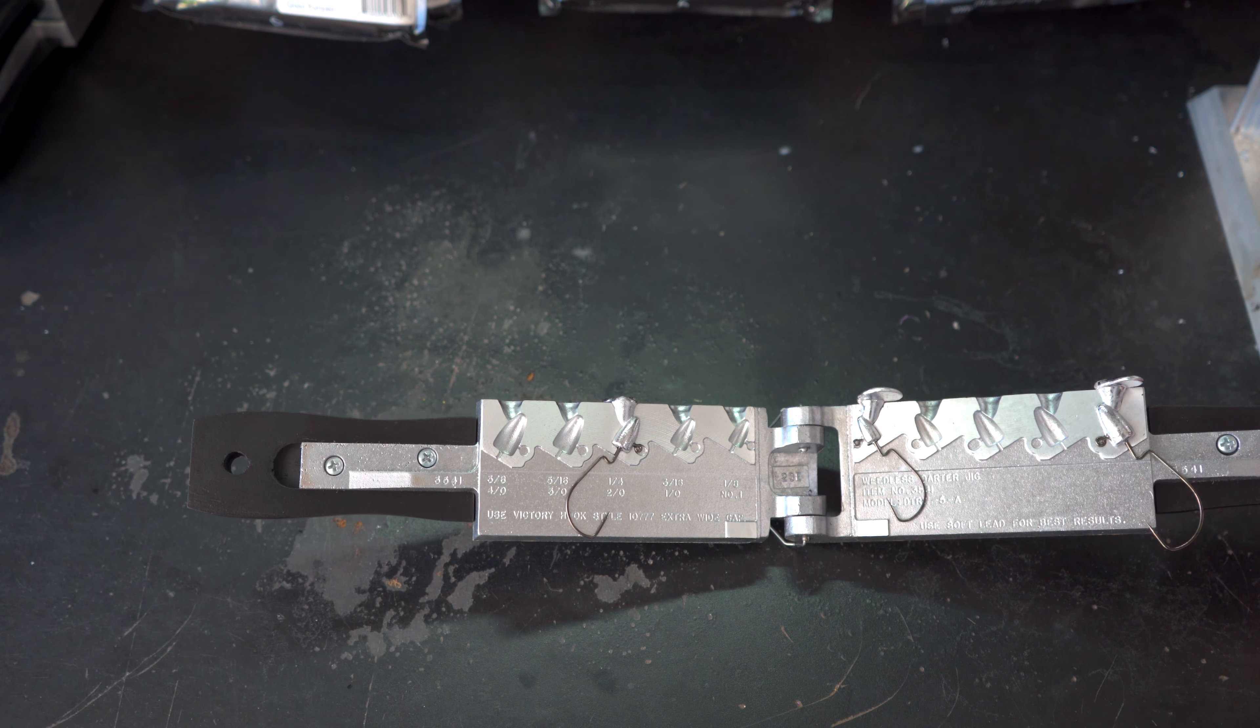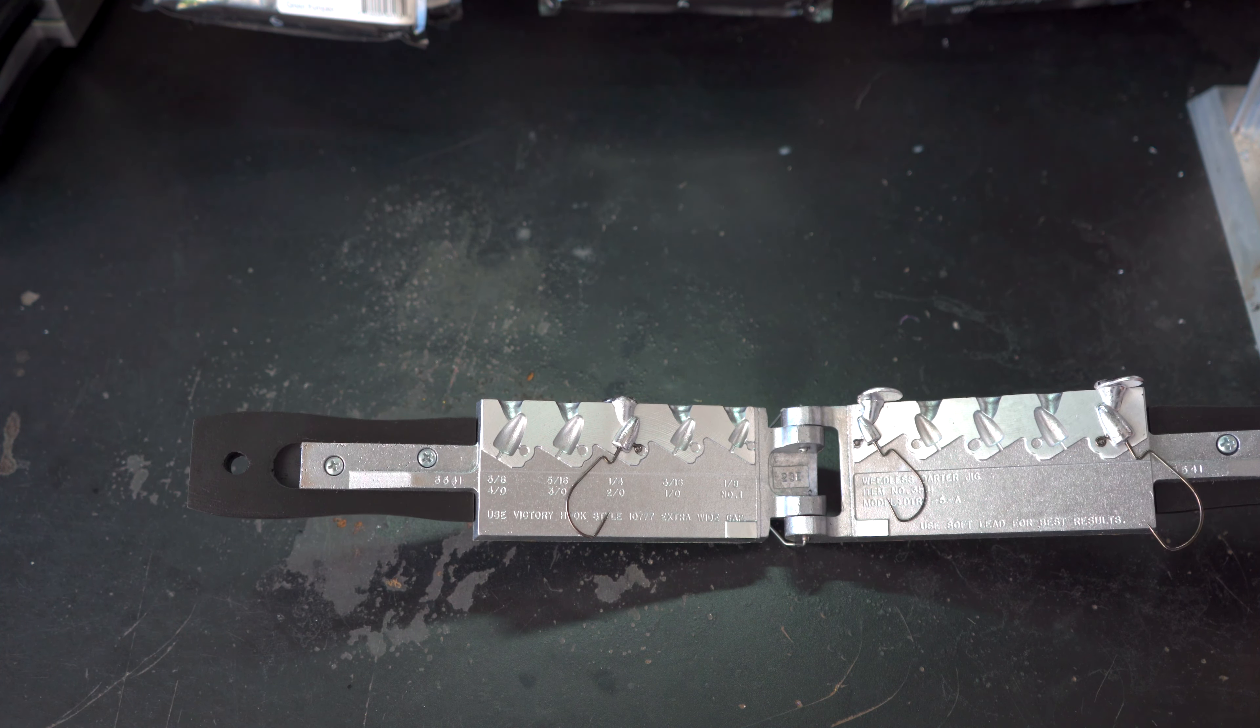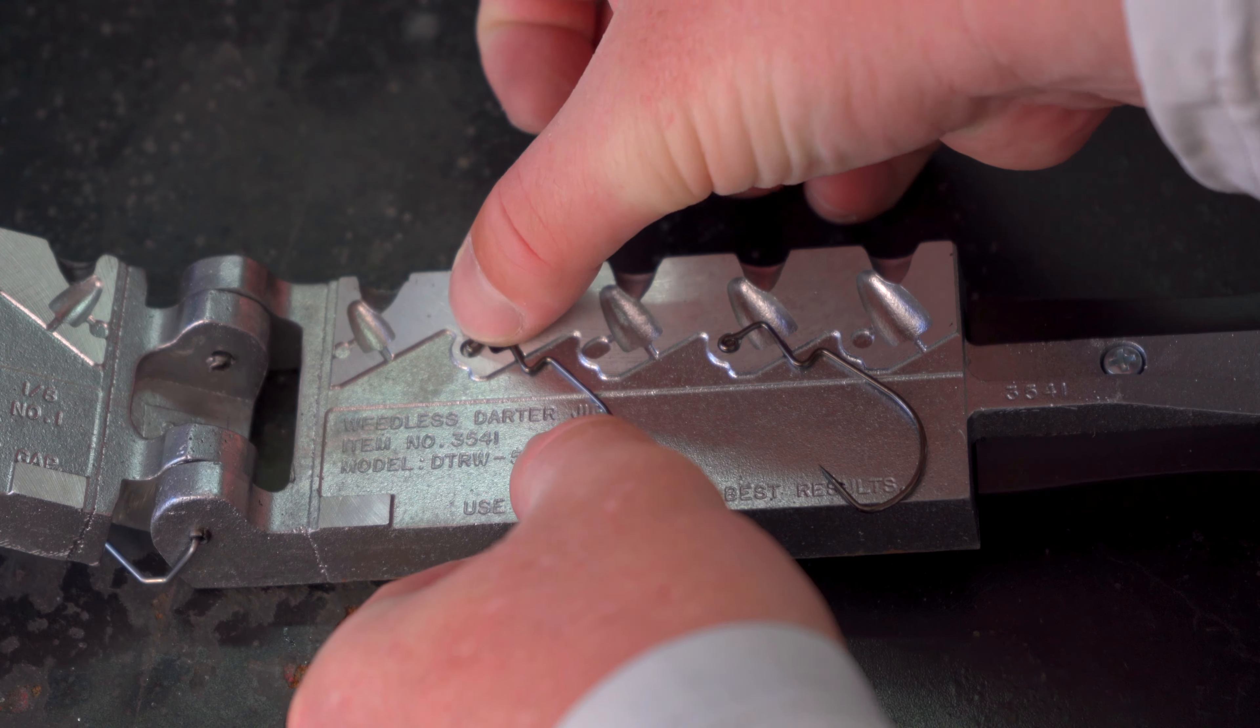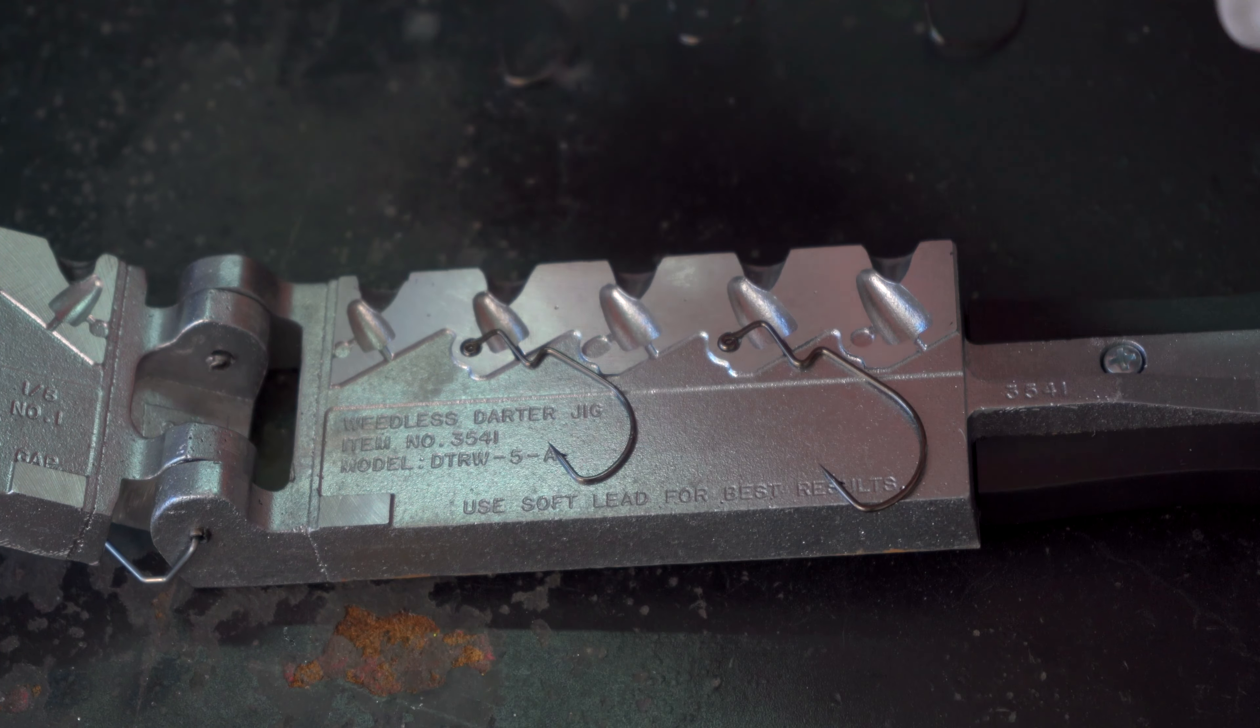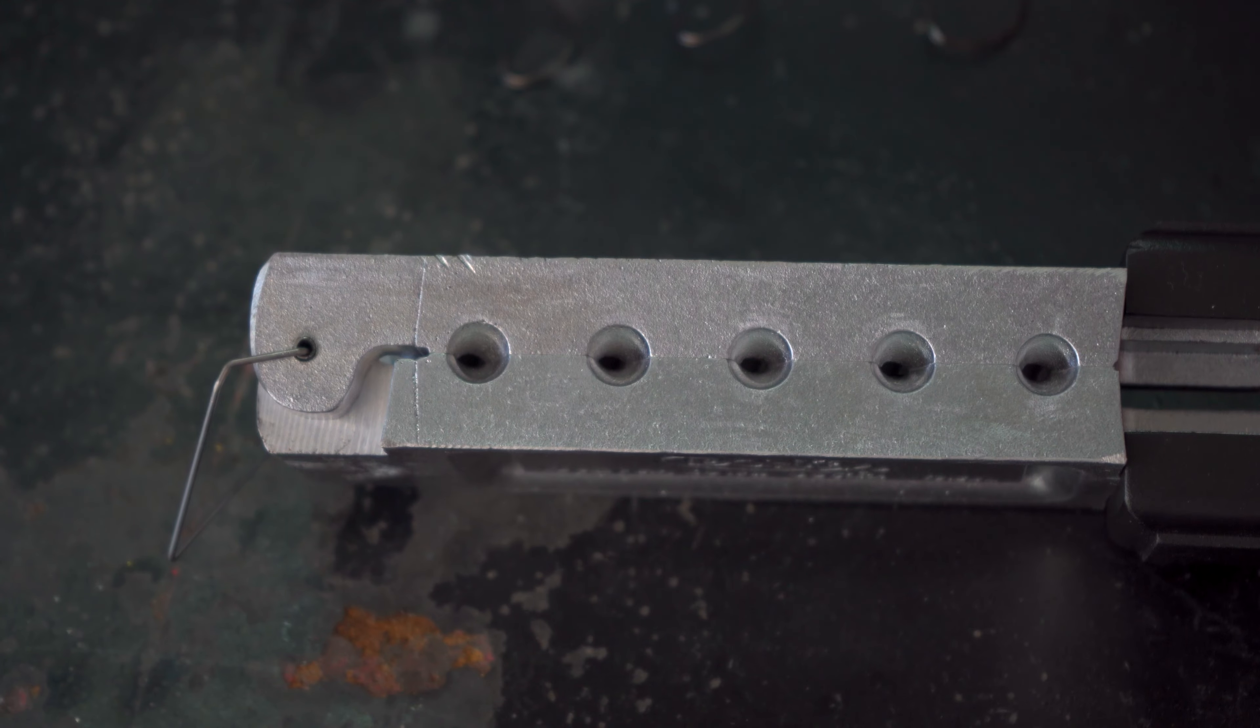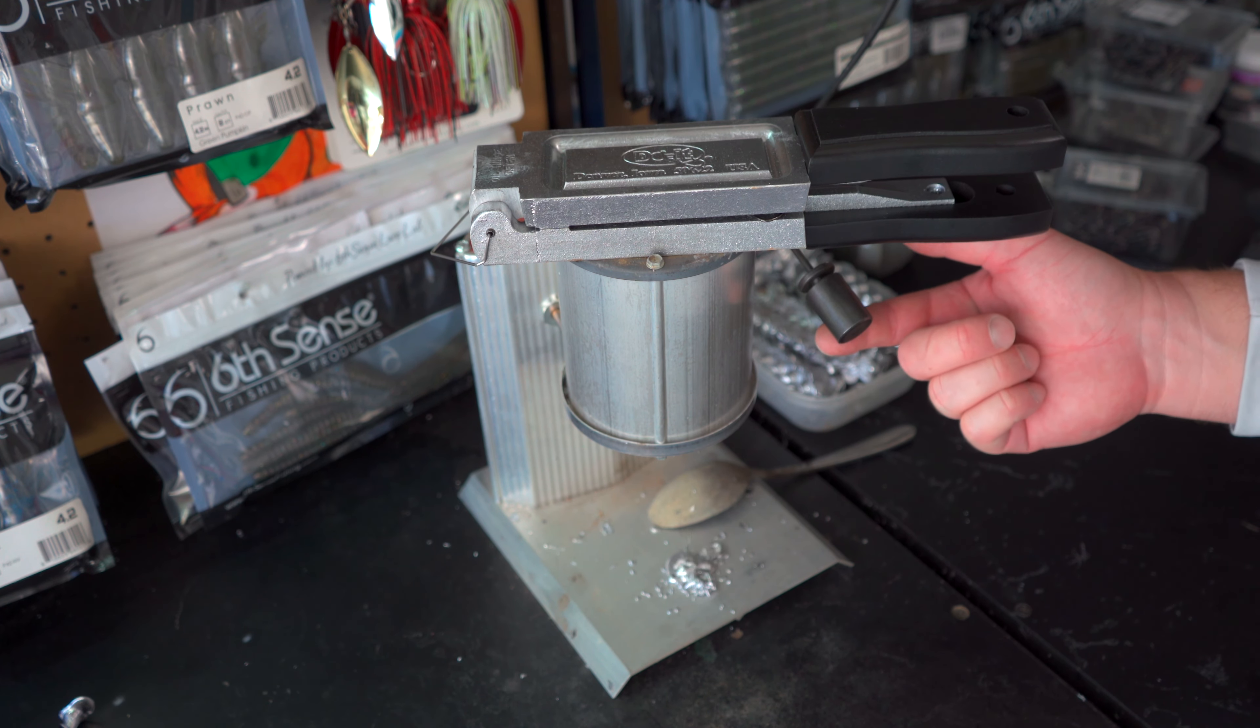Next, we're going to take our three-eighth hook and place it into the five-sixteenths size and then we're going to take our one-eighth hook and place it into the three-sixteenth ounce size. We're going to close up the mold. Check to make sure everything is nice and flush, which it is. Now I'm going to check for flow. We still have good flow.